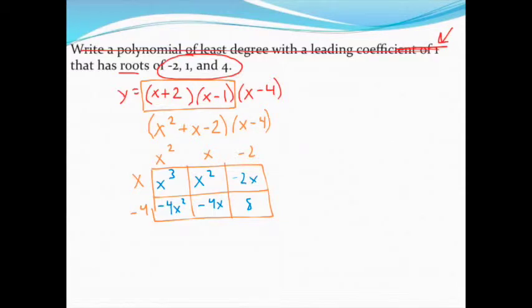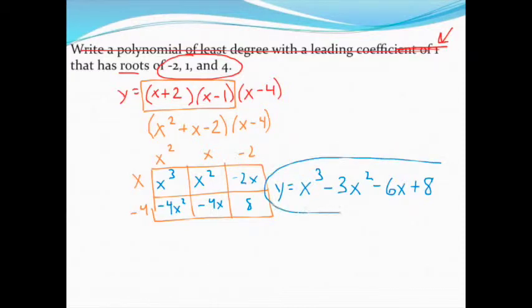Finally, to finish this problem, I'm going to pull everything out of the box and add up all my like terms, putting these in descending order. x to the third will go first. As predicted, we have a cubic polynomial because we had three solutions. My x squared terms add up to negative three x squared. My x terms add up to negative six x, and then my constant is positive eight. Don't forget to put the y equals in front because we are trying to write an equation. So that polynomial is going to be the polynomial that has those three solutions.